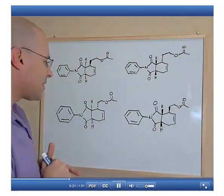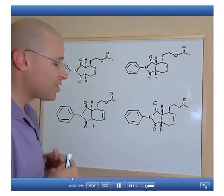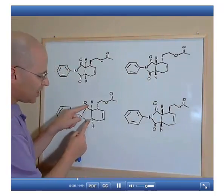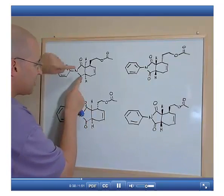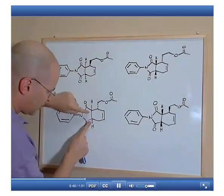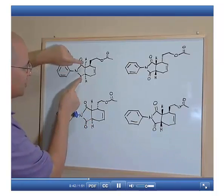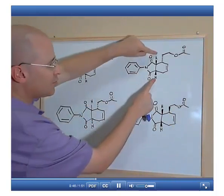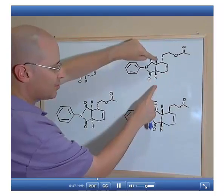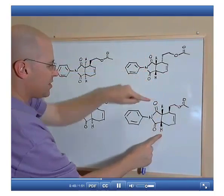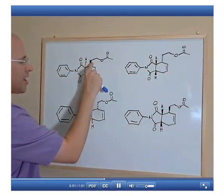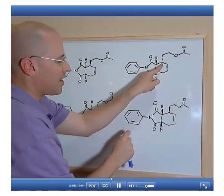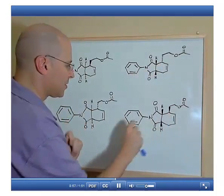The problem statement also tells us that the minor products retain the cis relationship at the bridgeheads. These are the bridgehead positions, and the cis relationship is maintained. The difference is in the third chirality center — that is what changes.